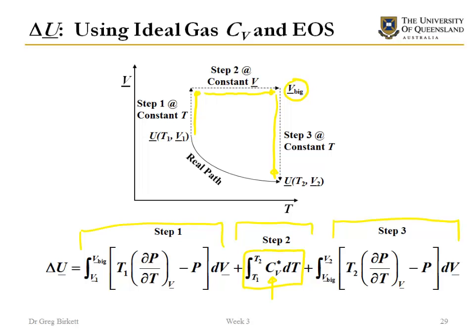We end up with a three-step process: constant temperature change in volume step, constant volume change in temperature step, and then constant temperature change in volume step. This three-step path we're going to use again and again because we tend to have data at these ideal gas conditions and then the equation of state can help us calculate what's going on in these other two steps.